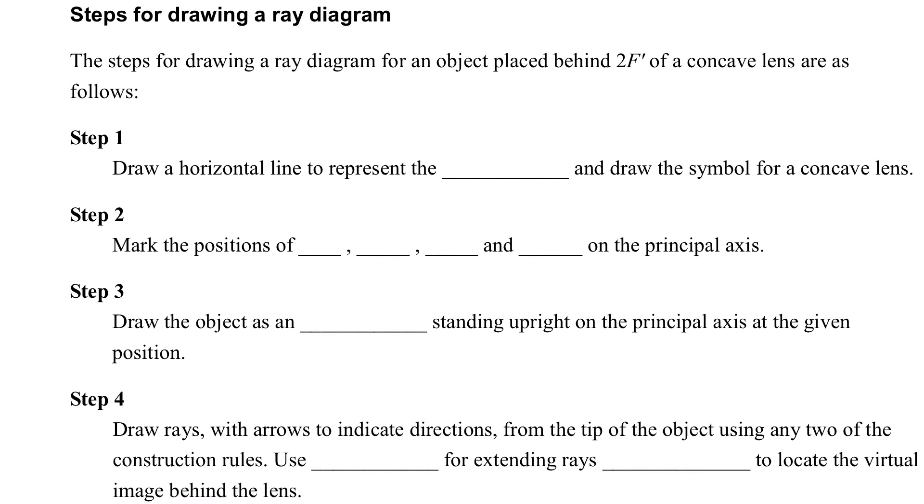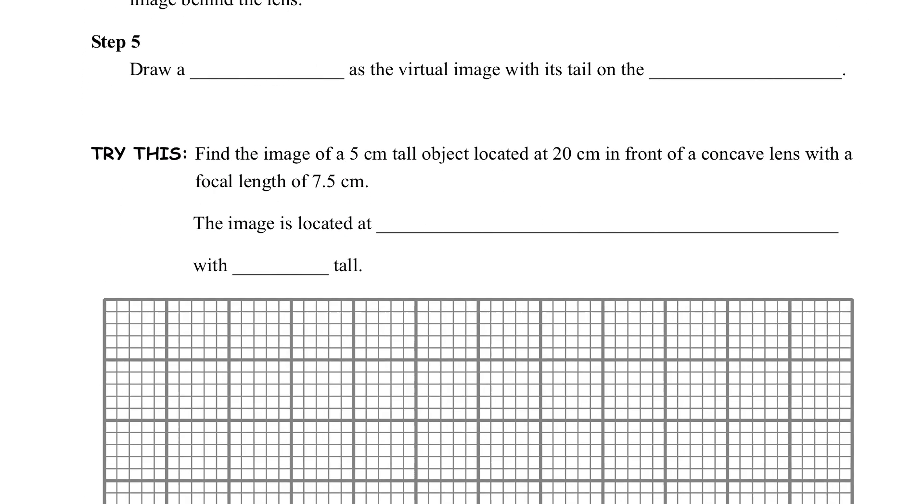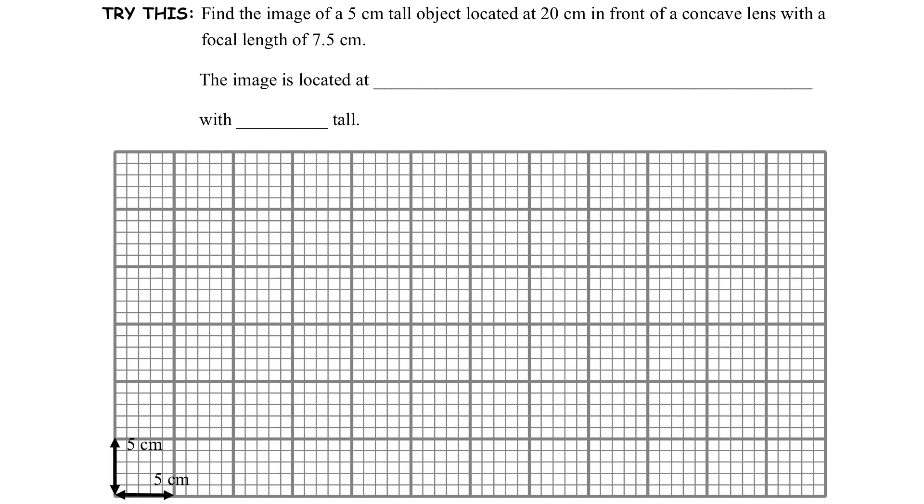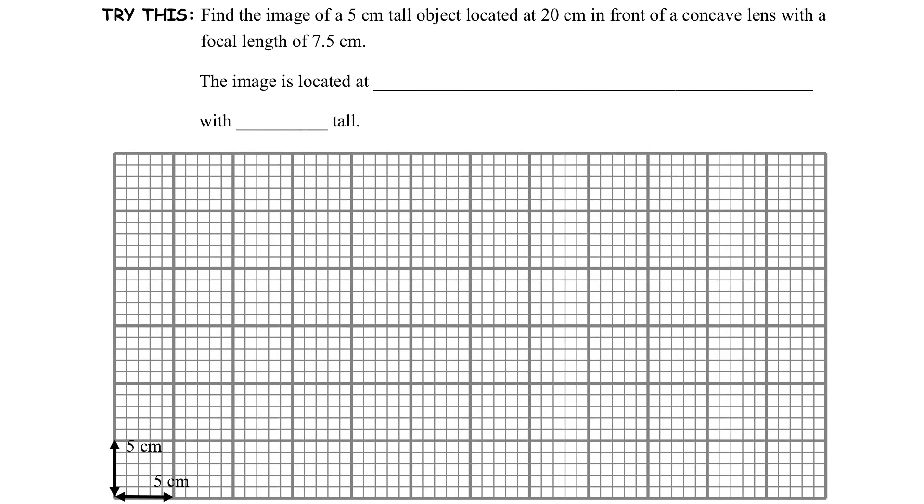So here we will go through the steps of drawing the ray diagram. Firstly, let's look at this example. In this example, we want to find the image of an object, which is placed in front of the concave lens.